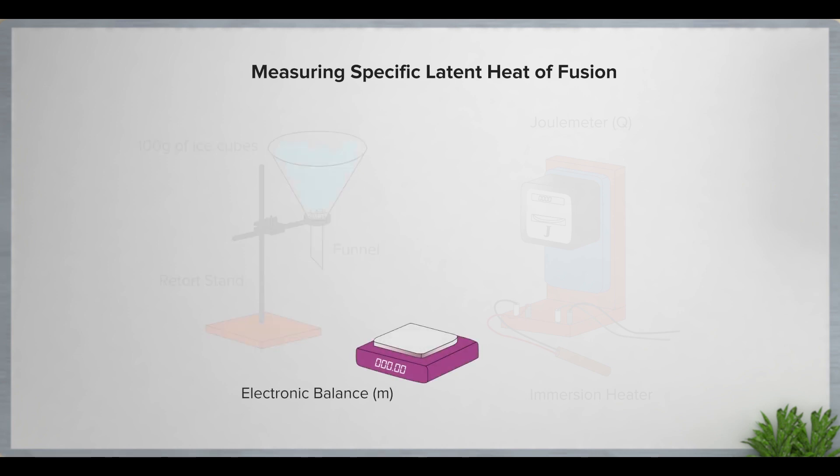Then, measure the mass of an empty beaker using an electronic balance. The beaker is then placed below the tip of the funnel to collect the melted ice water.